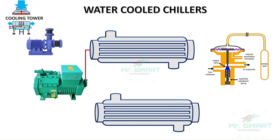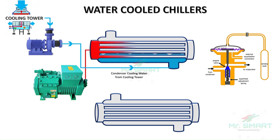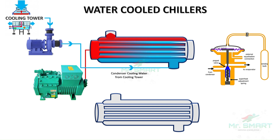Similar to the air-cooled chiller, the low-pressure refrigerant is compressed into a high-pressure, high-temperature refrigerant in the compressor and passed to the condenser. In the condenser, the refrigerant releases heat to the water, which is then cooled in the cooling tower. A cooling tower is a special setup that releases heat from water to the atmosphere through evaporation. The hot water from the condenser is cooled and pumped back to the condenser through condenser pumps.